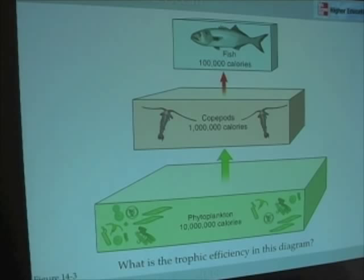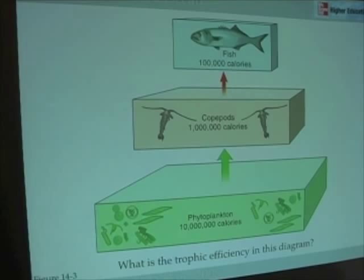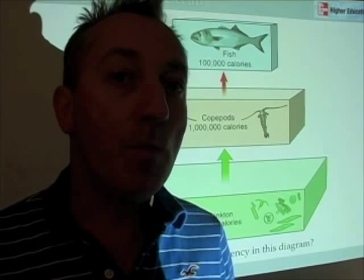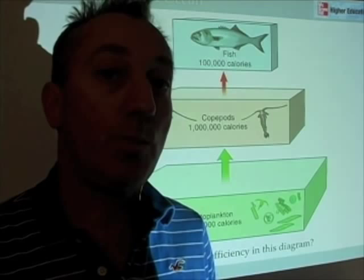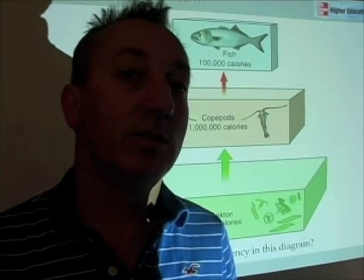If we look at a three-level trophic pyramid expressed in terms of calories — an energy trophic pyramid — we might see something like this: 10 million calories of phytoplankton, a million calories of copepods, and 100,000 calories of fish. Can you calculate the trophic efficiency? How much energy is being transferred from phytoplankton to the zooplankton, and from the zooplankton to the fish?